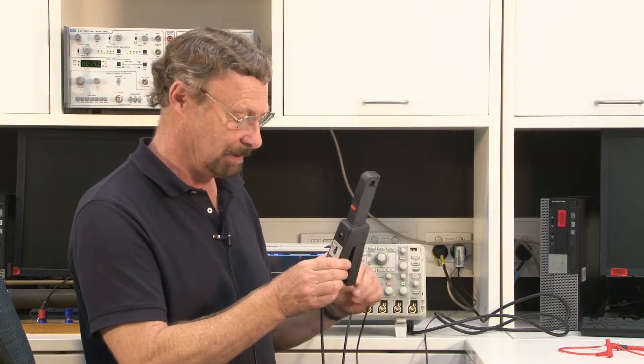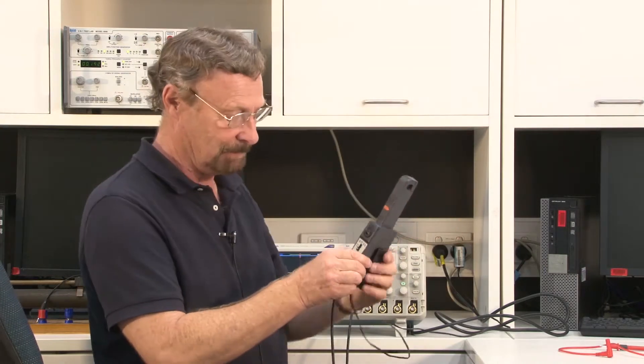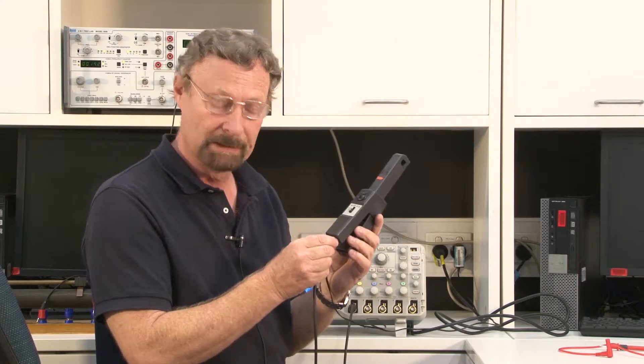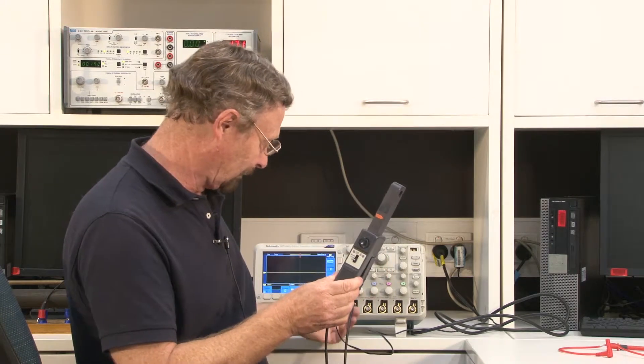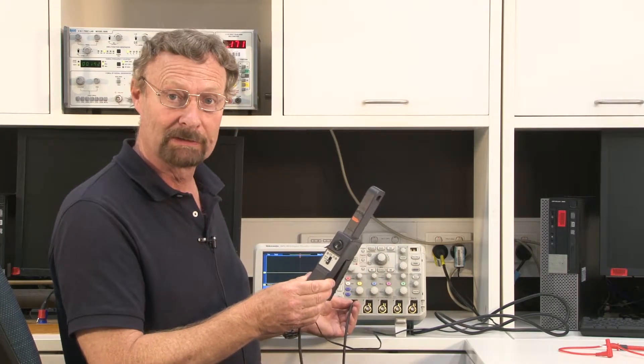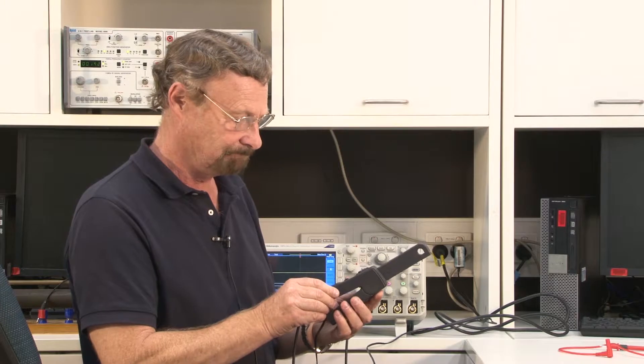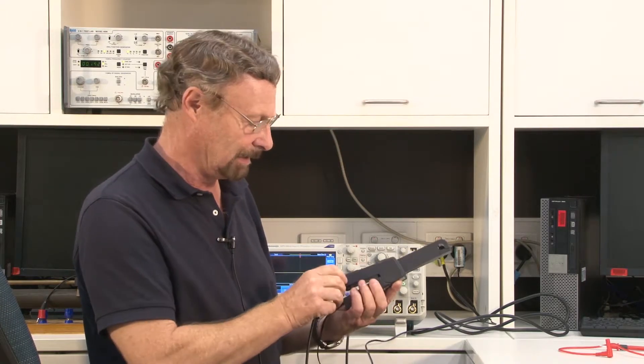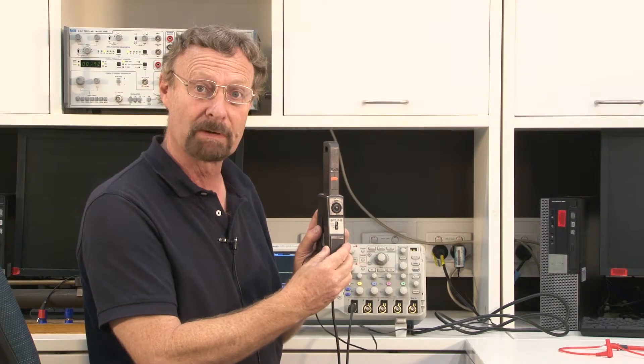Now this guy has to actually be plugged into the mains, which I've done over here, and then the output of the probe is connected, in my case, to channel 1 on the oscilloscope. So come a little bit closer and then I can show you some of the features of the probe.